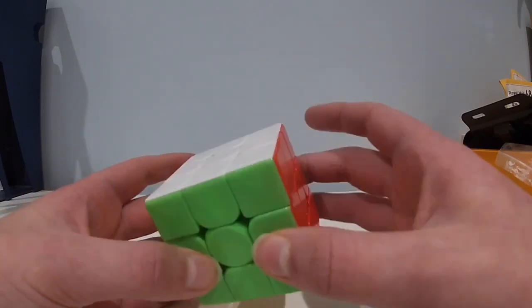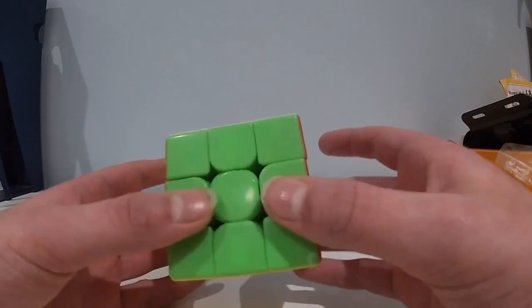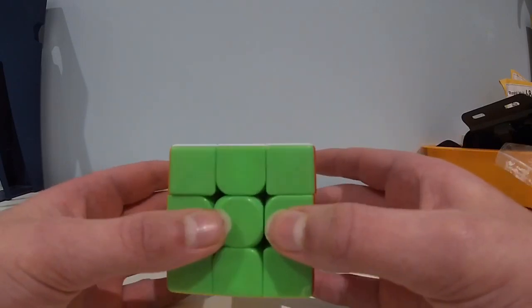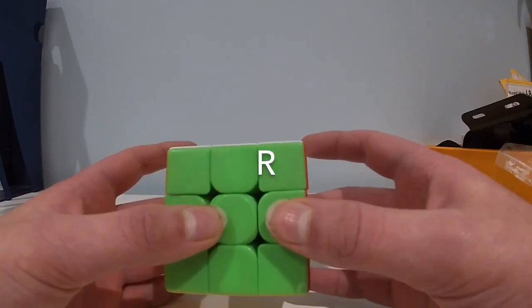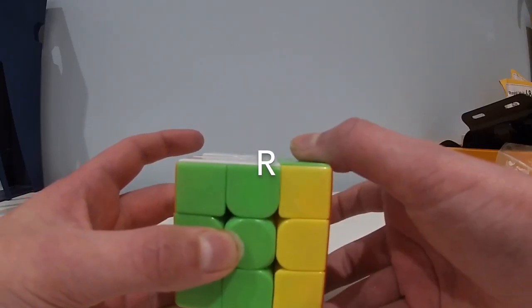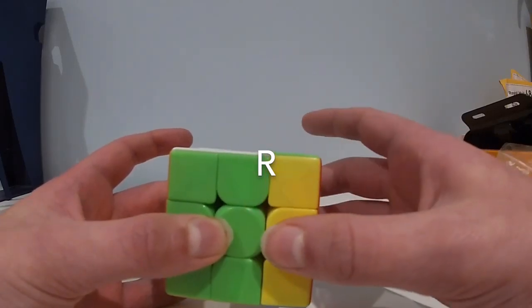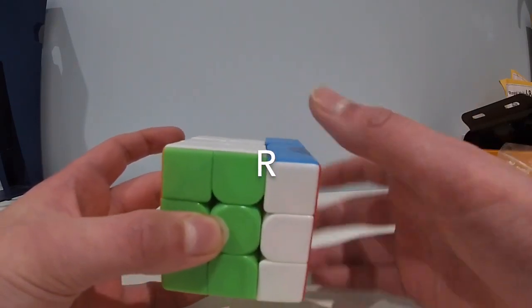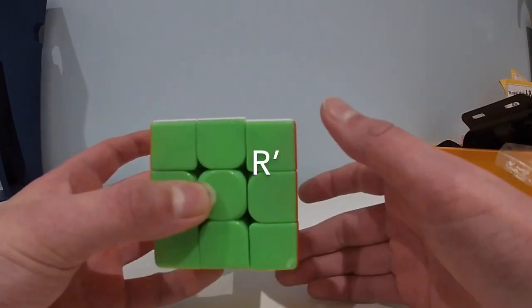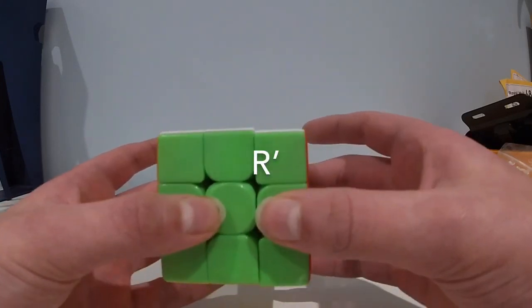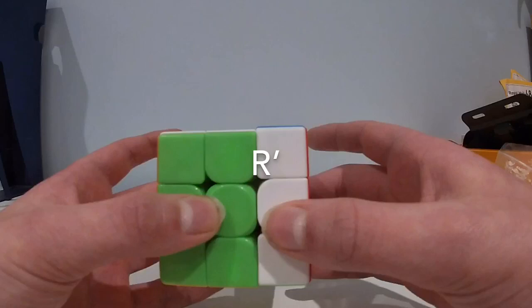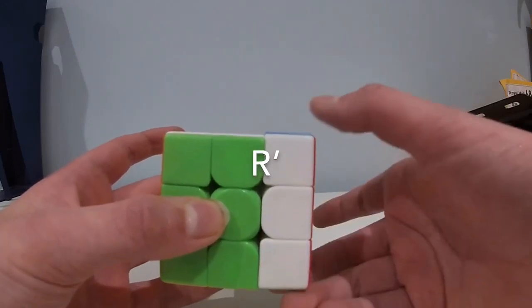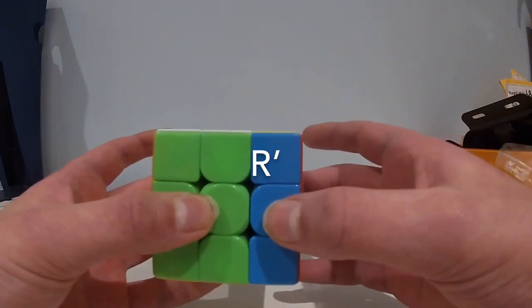Those along with R and L moves which I'm going to show you now are the easiest finger tricks. R you just move up. R prime there are two ways, you can either just move it down like that and then go back to home grip or move up finishing in home grip.